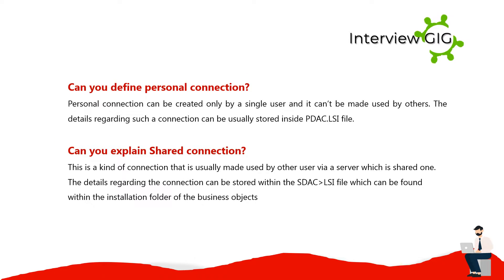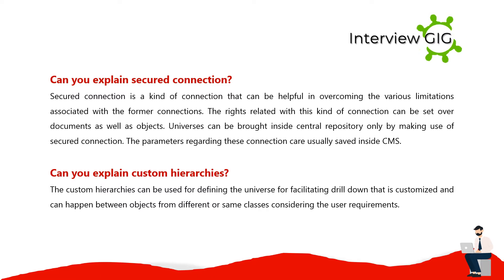Can you define personal connection? Personal connection can be created only by a single user and cannot be used by others. The details regarding such a connection are usually stored inside a .LSI file. Can you explain shared connection? This is a kind of connection used by other users via a shared server. The details are stored within a .LSI file found within the Business Objects installation folder. Can you explain secured connection? Secured connection helps in overcoming the various limitations associated with the former connections. Rights related with this kind of connection can be set over documents, objects, and universes. Universes can be brought inside the central repository only by making use of a secured connection. The parameters are usually saved inside the CMS.